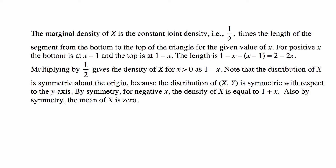The marginal density of X is the constant joint density of one-half times the length of the segment from the bottom to the top of the region for a given value of X. For positive X, the bottom is at X minus one and the top is at one minus X, so the length is one minus X minus (X minus one), which is two minus two X. Multiplying by one-half gives the marginal density of X for positive X as one minus X. Note that the distribution of X is symmetric about the origin, because the joint distribution is symmetric with respect to the Y-axis. By symmetry, for negative X the density of X is one plus X, and by symmetry the mean of X is zero.